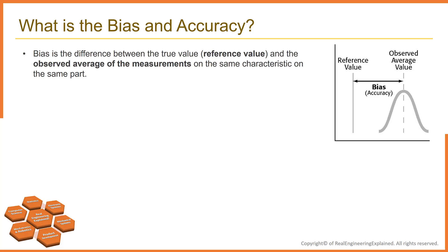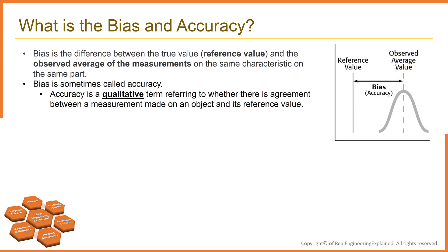Bias is the difference between the true value — our reference value — and the observed average of the measurements on the same characteristic on the same part. Bias is sometimes called accuracy. Accuracy is a qualitative term referring to whether there is agreement between a measurement made on an object and its true value, meaning the target or reference value.